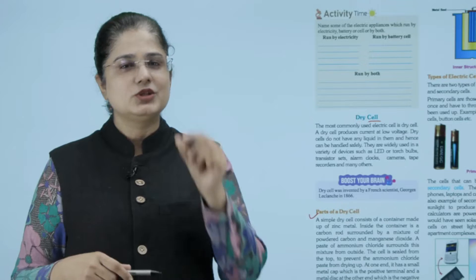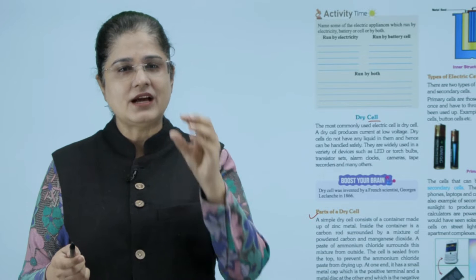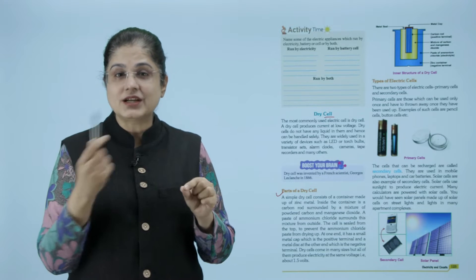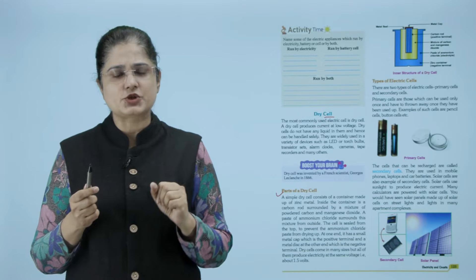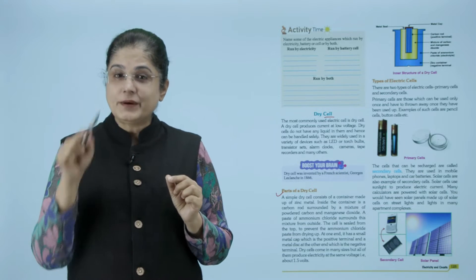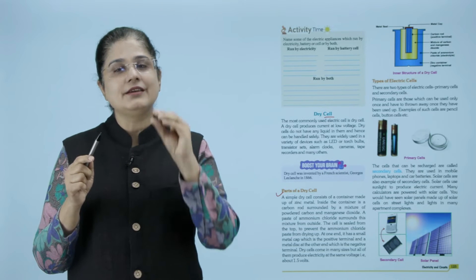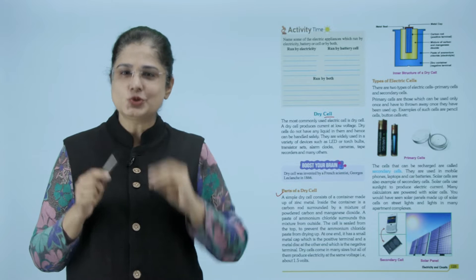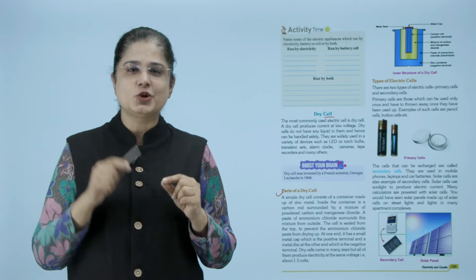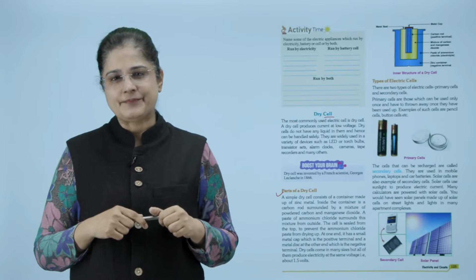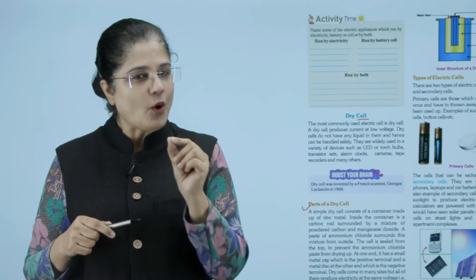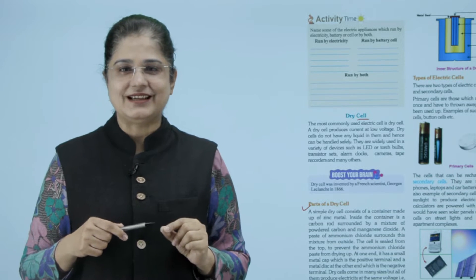So zinc metal के container के अंदर हमारा एक carbon rod पहले suspended होता है। उसके around carbon rod को surround करता है carbon और manganese dioxide का mixture। इसके आस पास भी जो है एक ammonium chloride का paste होता है और ऊपर की जो cap है वो इसको seal करती है ताकि कि यह ammonium chloride का mixture जल्दी से सूख ना जाए। एक end पे जहां metal cap है वो positive terminal है और नीचे वाली जो metal disk है वो negative terminal है। अब कोई भी size हो, कोई भी shape हो, जो dry cell है वो one point five volt की electricity produce करता है।